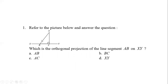Now we discuss MCQ questions given in your textbook. Refer to the picture below and answer the question: Which is the orthogonal projection of the line segment AB on XY? Here, AB and XY are given. The orthogonal projection — in Bengali, 'Lombo-Ovik-Kep' — is BC. So the required answer is BC.